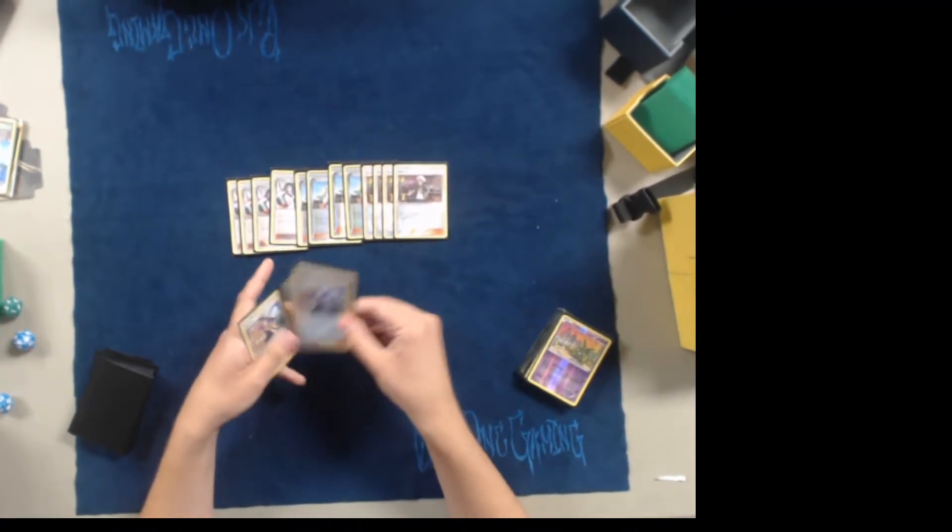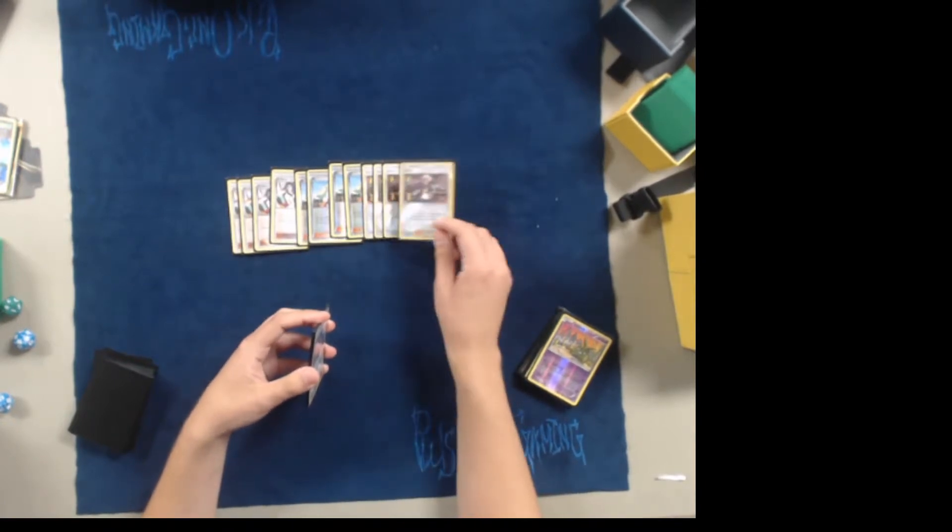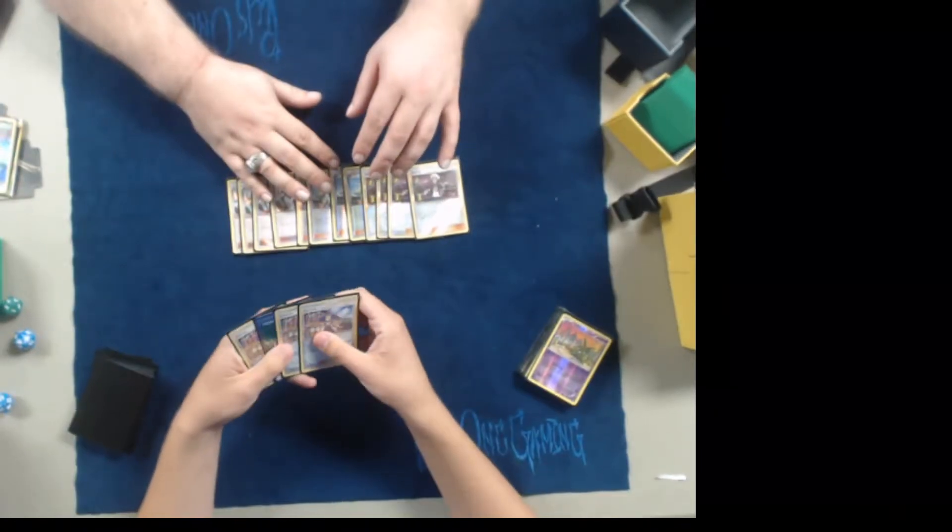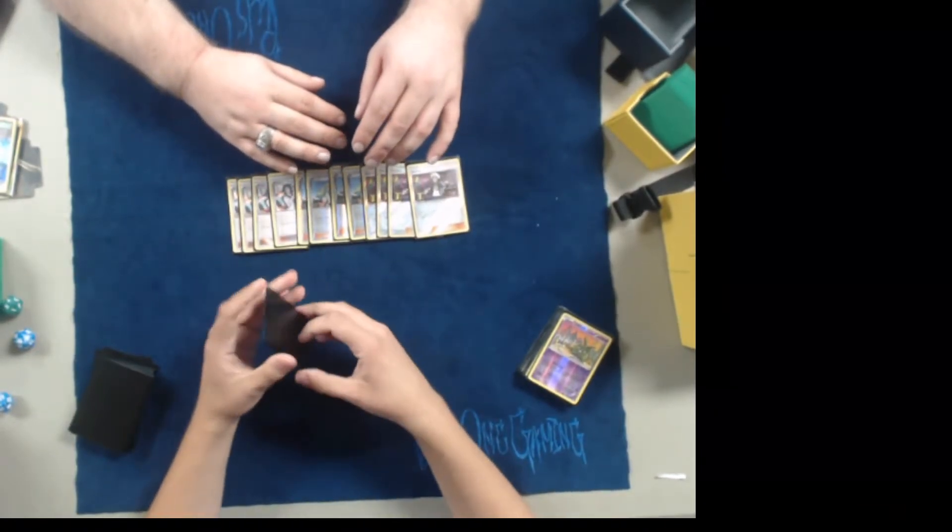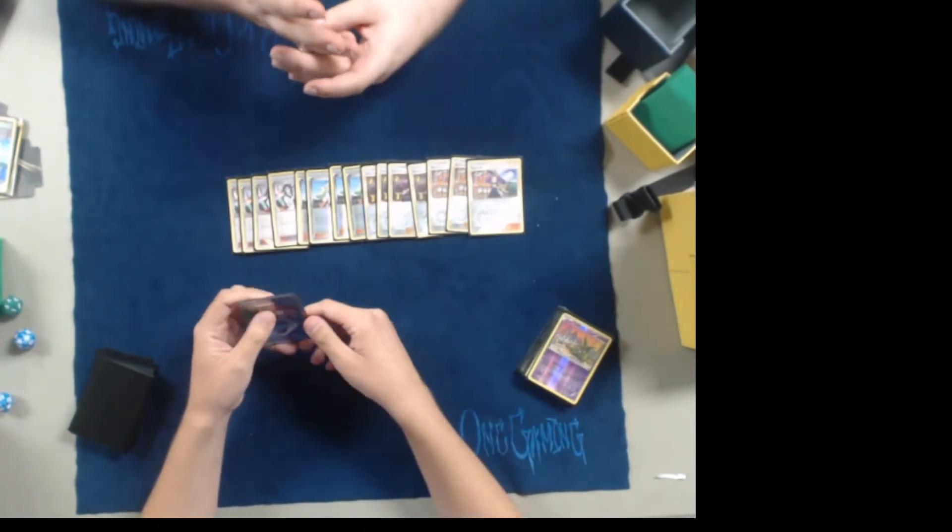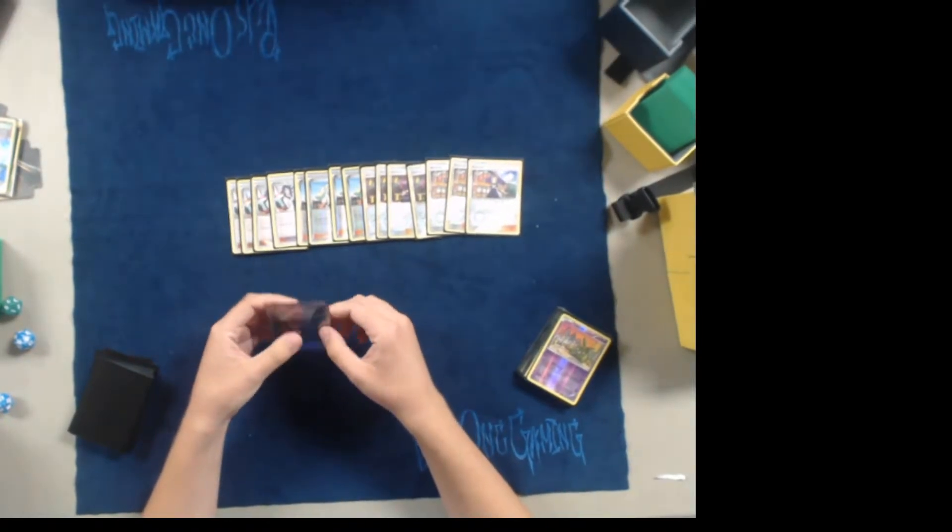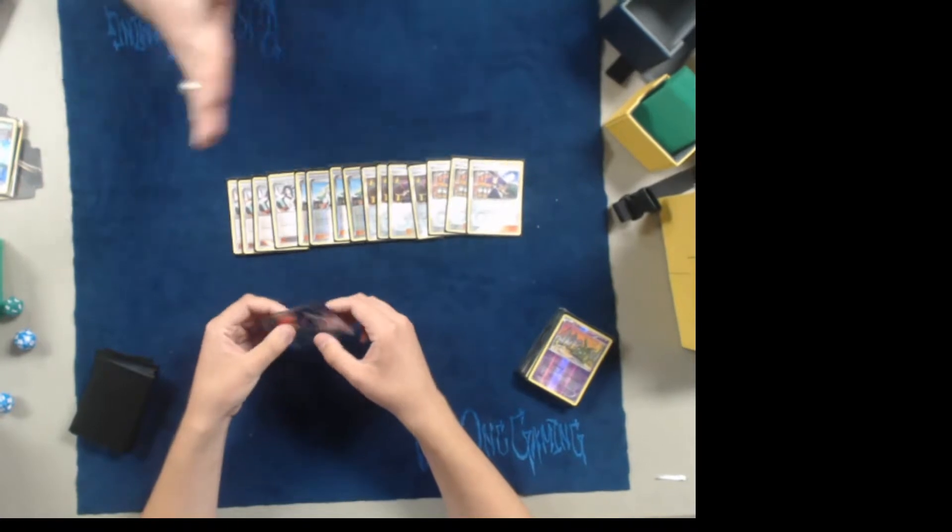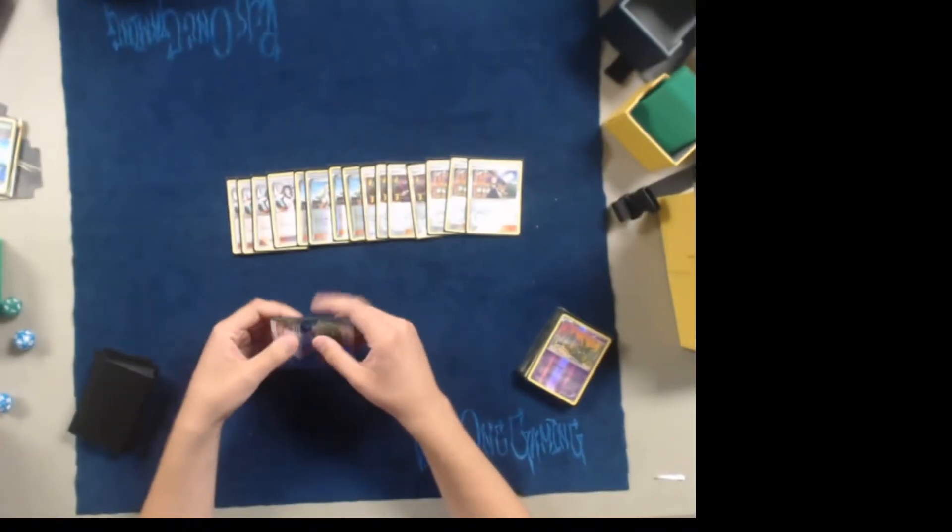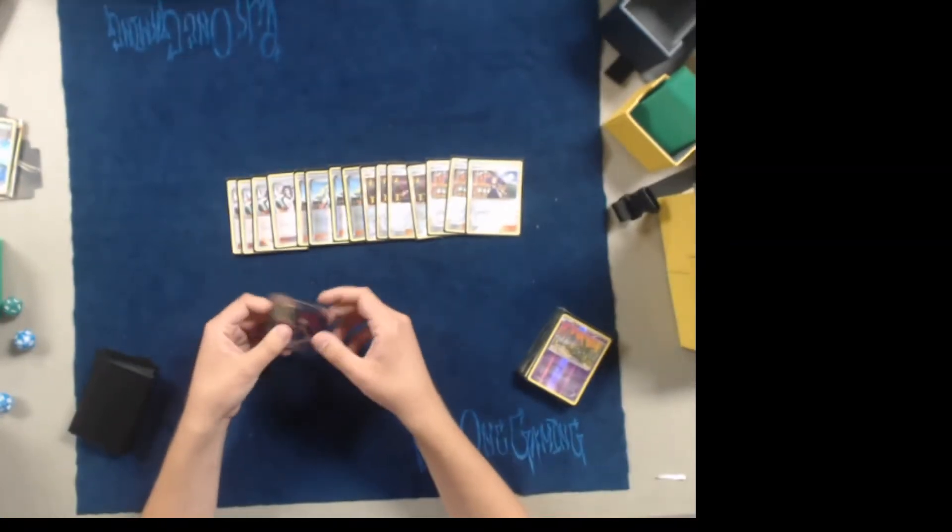Next, I play four Guzma. Guzma is probably the main man of the deck. You just need to be able to constantly switch your Gluisapod out of the active, and you want to switch it with Tapu Koko just so you can get the additional 120 damage every turn.